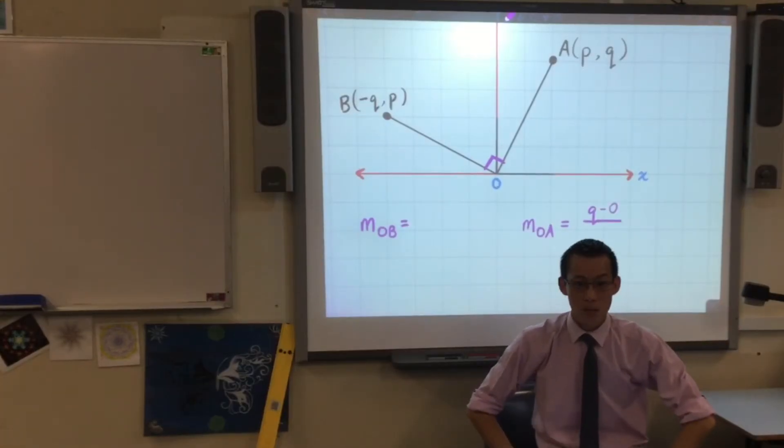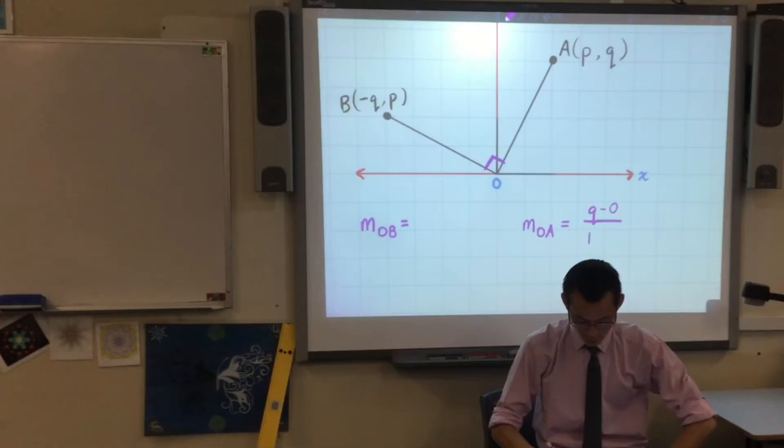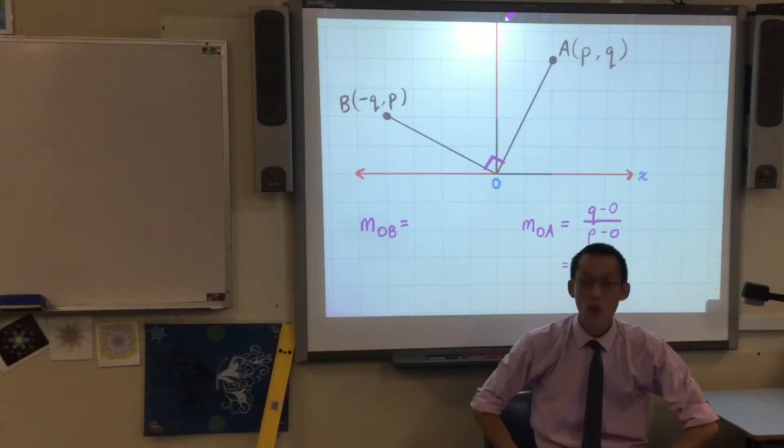What about the denominator? What's the run? It's P, which I get from P minus zero. Do you agree? So there's my gradient, right there. Q over P.